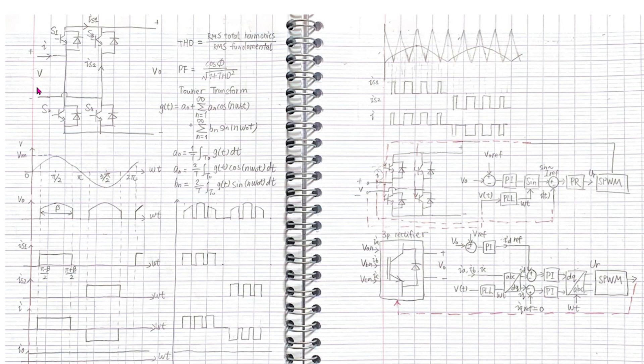Normally, the power factor is the cos phi. Phi is the angle between voltage and current. This is only applicable when both the voltage and current are sinusoidal. Distortion power factor is the cos phi divided by root of 1 plus THD squared. THD is the total harmonic distortion. When THD is high, we get a low power factor.